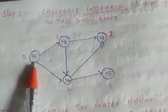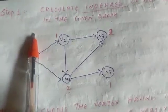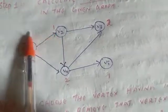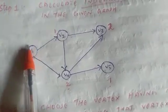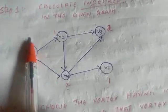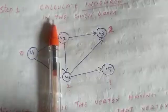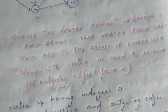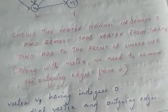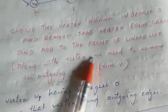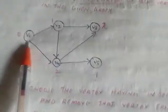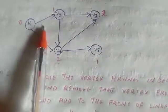We take the vertex with in-degree 0 and remove it. We can remove that vertex — in this case V1 has no incoming edges, so we remove it. Step 2 is to choose the vertex having in-degree 0, remove it from the graph, and add this vertex to the front of the linked list. When removing the vertex, we also remove its outgoing edges.